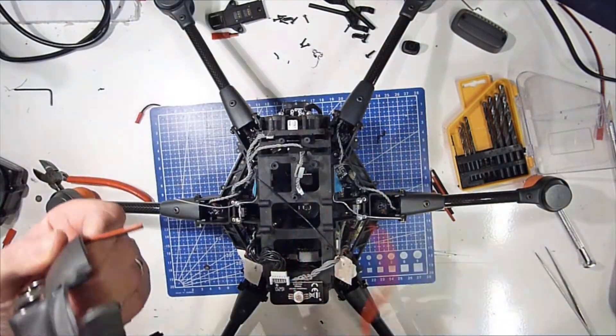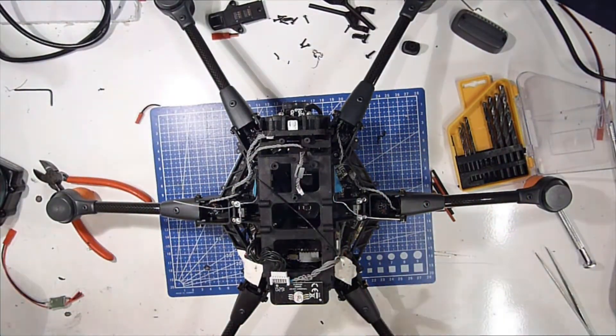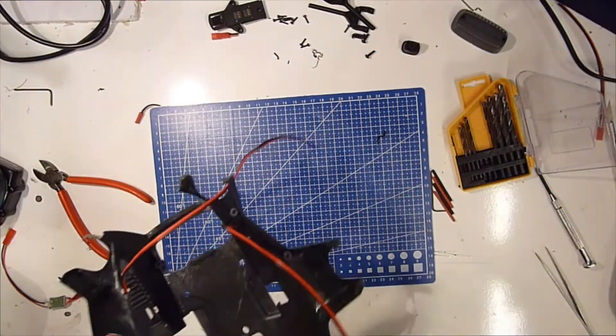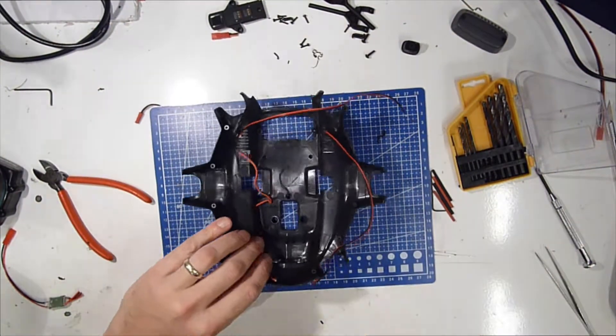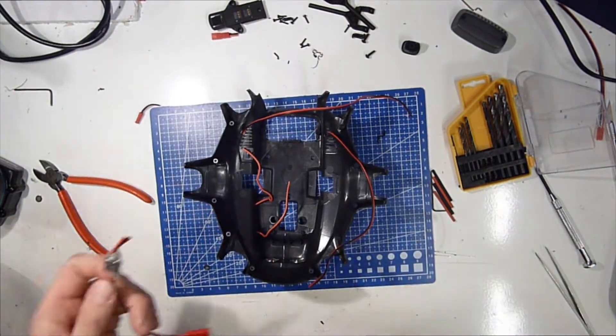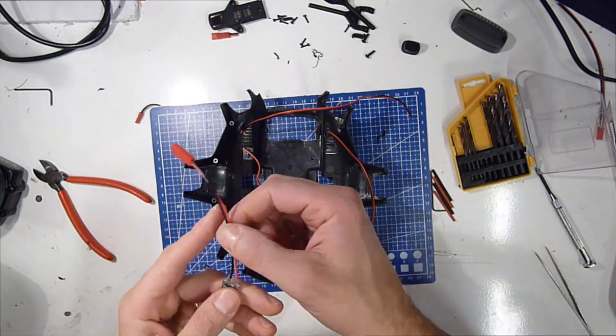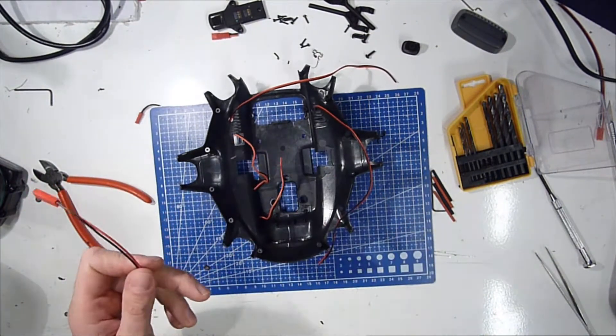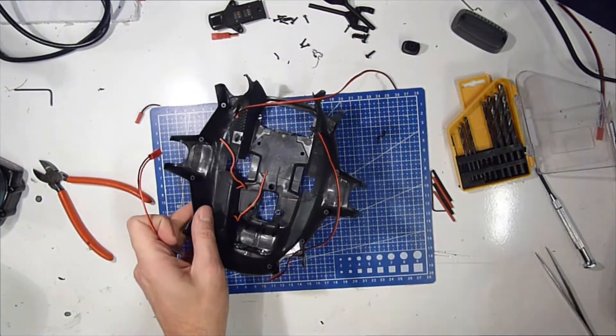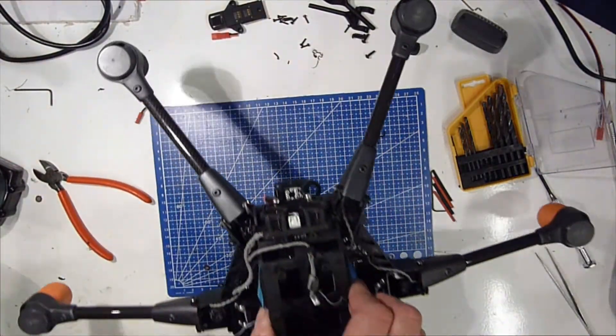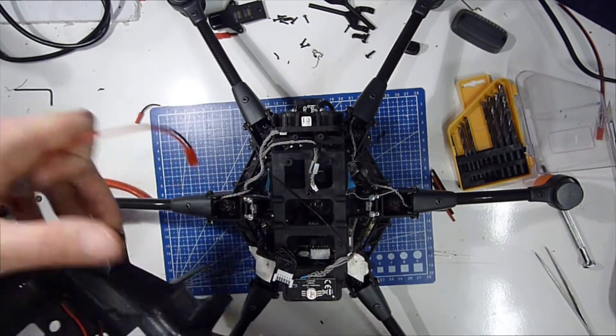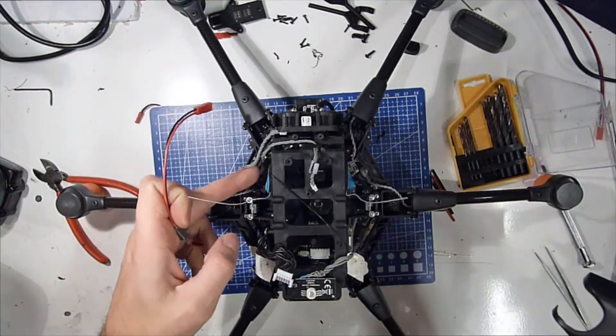This will easily reach it. These two should go back to this distributor board, and then these two should get to this side of the wire.